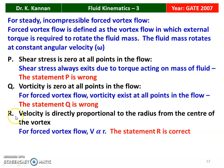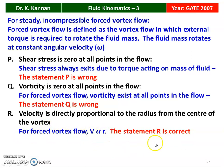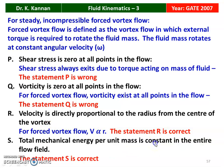Statement R states that velocity is directly proportional to the radius from the center of the vortex. For forced vortex flow, the velocity is indeed directly proportional to the radius, so statement R is correct. Statement S states that total mechanical energy per unit mass is constant in the entire flow field — this statement is also correct. Therefore, R and S are the correct statements.